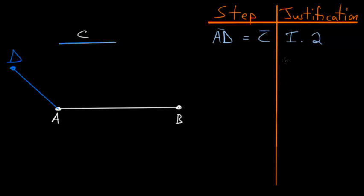From this step, what we want to do is use Postulate number 3, which allows us to construct a circle using any point as the center and any radius.